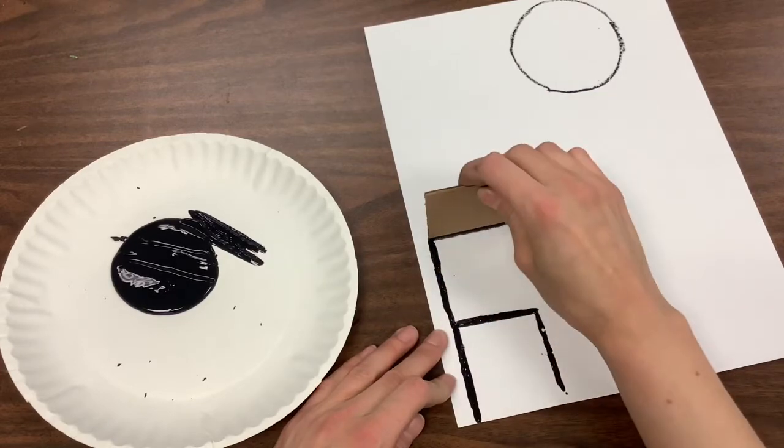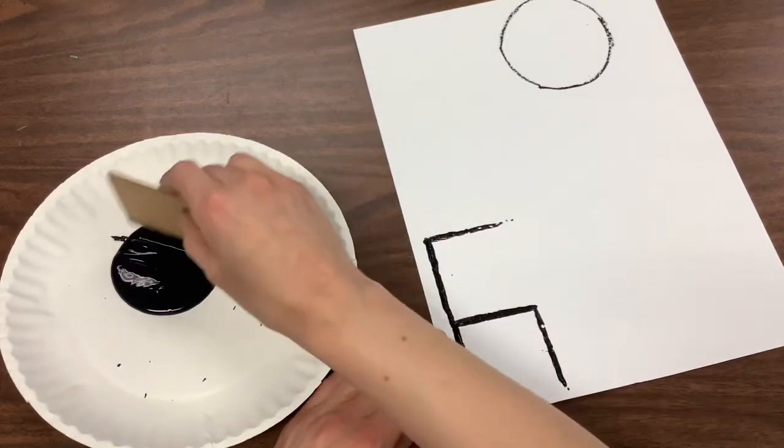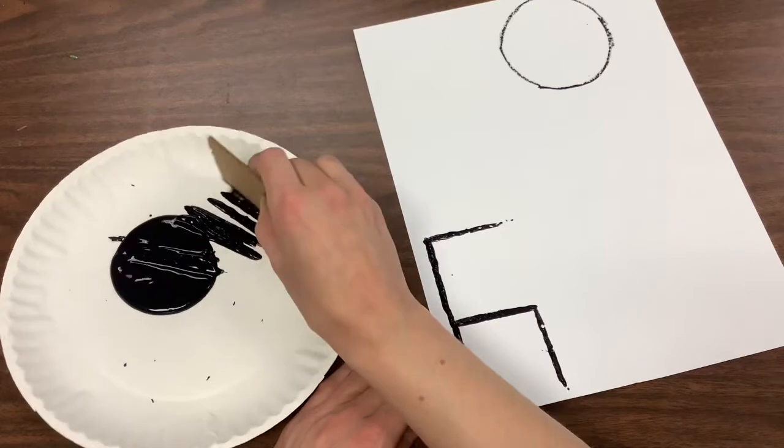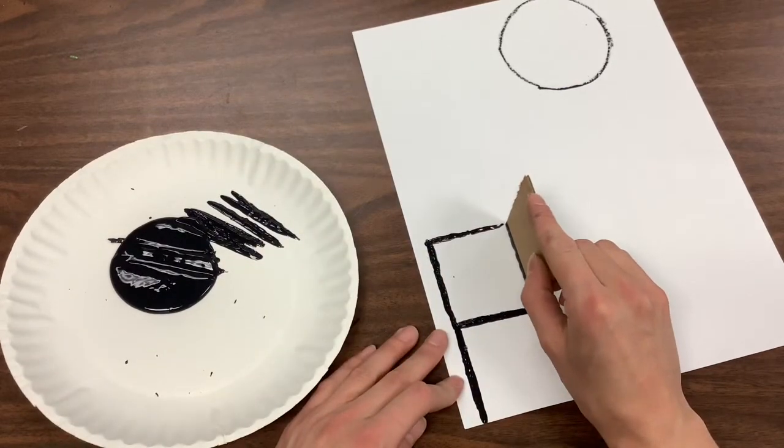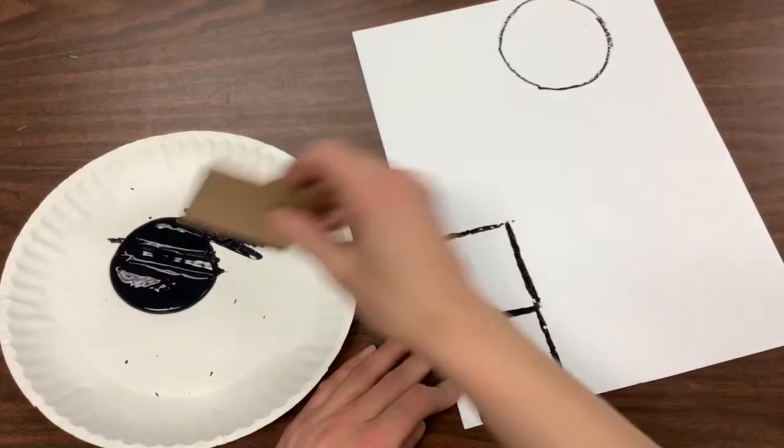Then I can make another square on top. If your cardboard runs out of paint, that is okay. Just dip it in the paint again and it will work just fine.